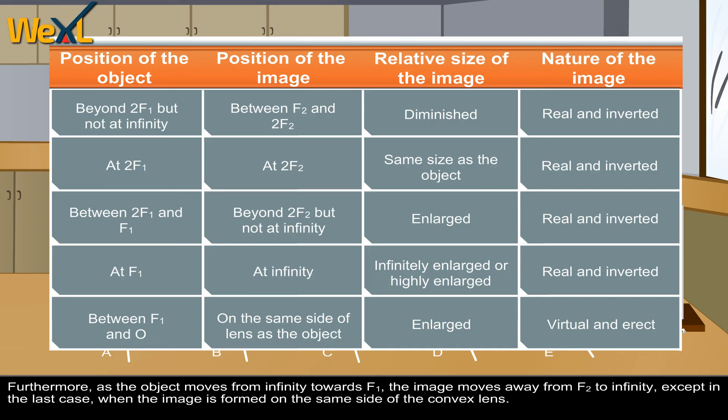Between F1 and O: on the same side of lens as the object, enlarged, virtual and erect.